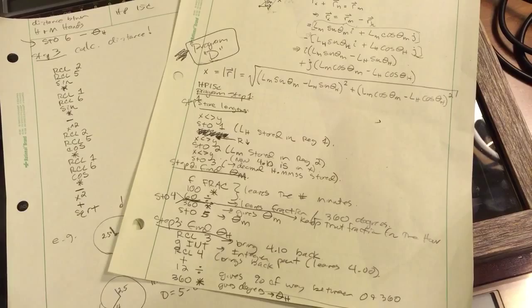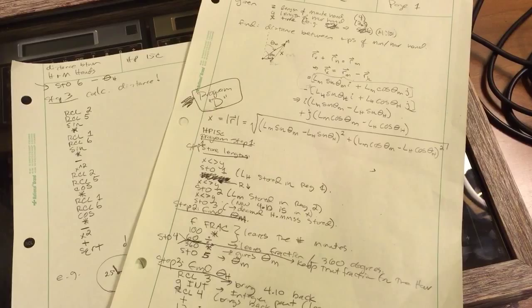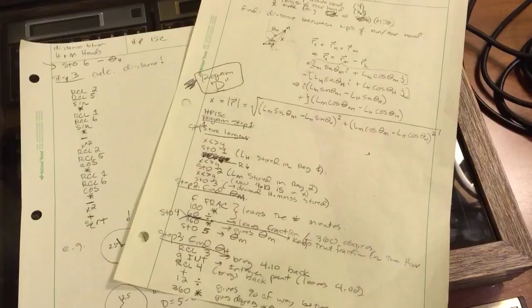And again, you just enter length of the minute hand, enter length of the hour hand, enter the time in decimal format. So like 4.10 means 4:10. 11.35 means 11:35. Not in decimal, just as it sounds.